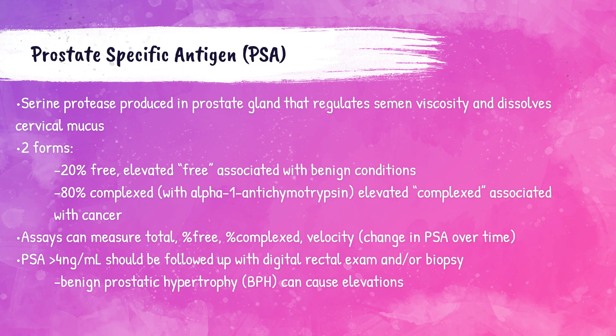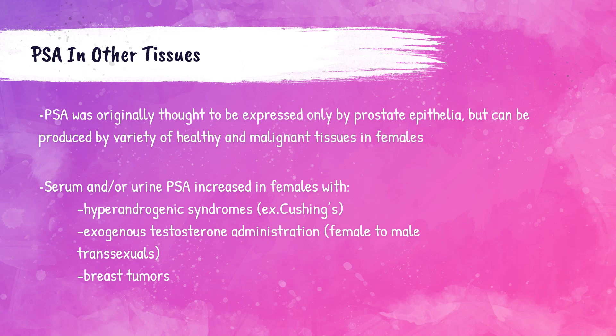A PSA level greater than 4 nanograms per milliliter should be followed up with a prostate exam and/or a biopsy of the prostate gland. Although PSA was originally thought to be expressed only by epithelial cells within the prostate, it can also be produced by subnormal and malignant tissues in women. For example, in hyperandrogenic syndromes like Cushing's disease — a disorder caused by excess cortisol — PSA can be elevated. Tumors of the breast and testosterone administration can also cause PSA elevations.